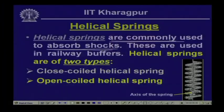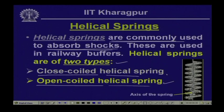Helical springs are of two types: closed coiled helical springs and open coiled helical springs. In this lesson we will be concentrating on the closed coiled helical spring, and subsequently we will look into the open coiled helical spring.